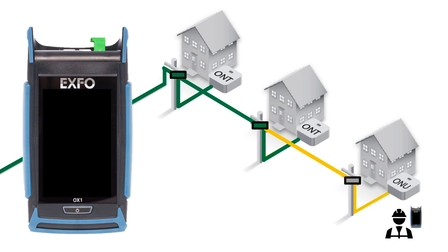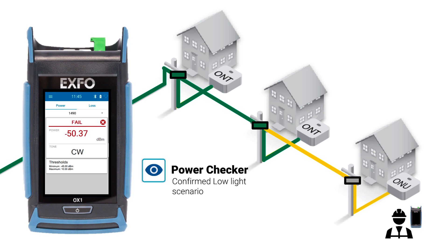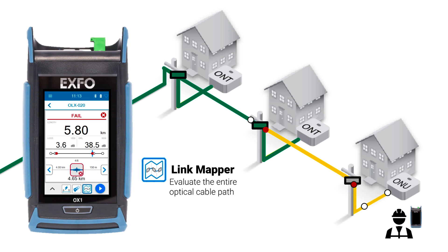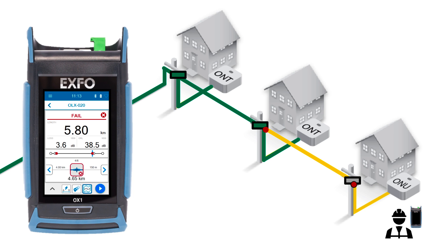If a low power scenario is present, then the tech can run the OX-1's Link Mapper to evaluate the entire optical cable path. If the drop cable has impairments, they will be identified in the Link Mapper results. They can then be repaired individually or completely by replacing that fiber link. In the event the drop cable is not the issue, the tech can evaluate the tap and the feeder cable integrity before calling in either a contractor or the restoration team.